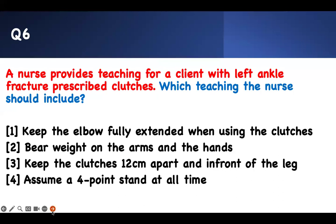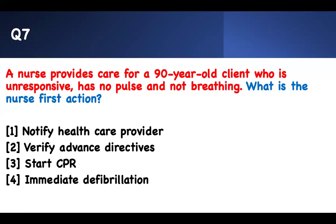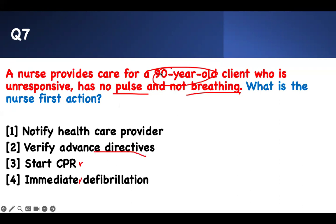Number seven: a nurse provides care for a 90-year-old client who is unresponsive, has no pulse, and is not breathing. What is the nurse's first action? This patient looks like cardiac arrest, and you want to do CPR or defibrillation — but first, you must verify the advanced directives. He is 90 years old and may be a do-not-resuscitate patient. Quickly verify with other staff: is he a DNR? If he is, you do not resuscitate, as intubation and all resuscitation efforts are also implied. Verifying the DNR status is the correct first action.